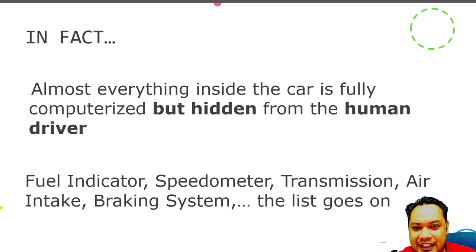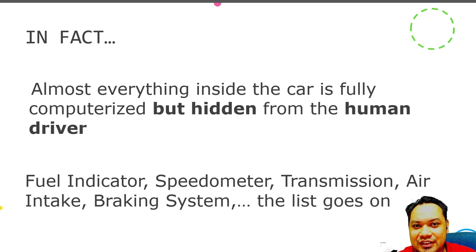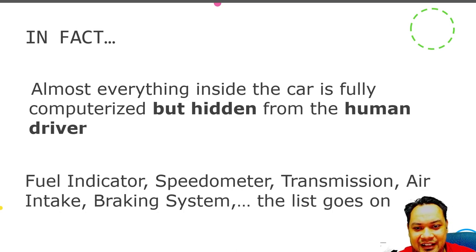The speedometer is designed to look physical in order to create calm for the user. If you recall from earlier in the lecture, technology should create calm in the physical environment. The analog-looking meter is designed so that humans don't panic or become distrustful upon realizing that a computer is actually controlling their car — the design creates a sense of safety and calm so users are not alarmed by the fact that they are interacting with a computer.